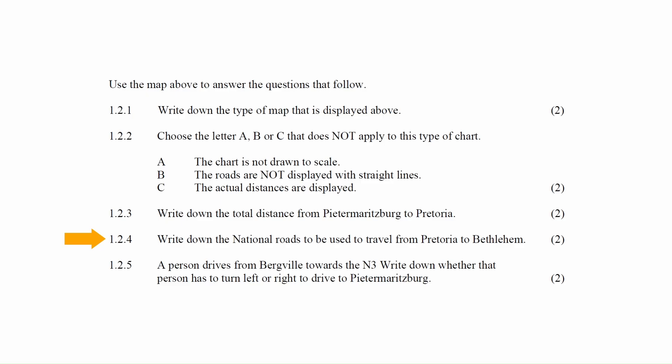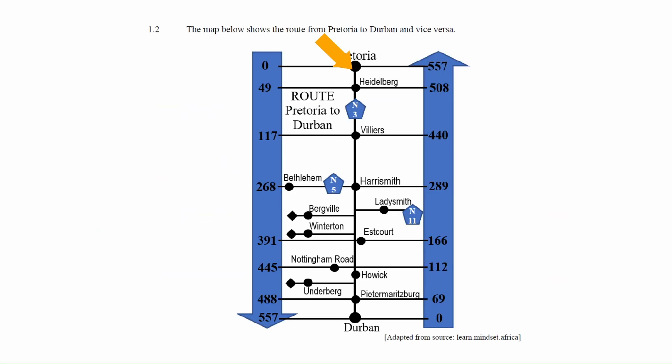In question 1.2.4 you have to write down the national roads used to travel from Pretoria to Bethlehem. From the chart we see that the N3 and N5 will be used to travel from Pretoria to Bethlehem.